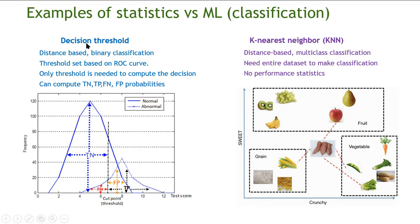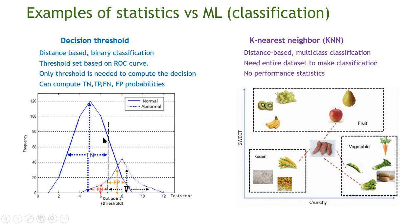Here's an example of a statistics method and a machine learning method that is derived from it. One common method in statistics is the decision threshold. I have two populations — a normal population and an abnormal population — and I subject them to a test. The individuals in these two populations are mixed together. If I choose a new individual, I set a threshold to determine whether that individual is normal or abnormal. If the individual scores above the threshold, I determine them to be abnormal.